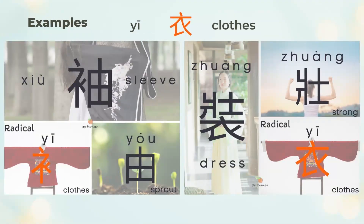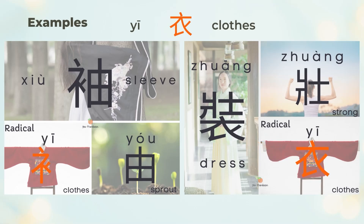袖 means a sleeve. 袖 is the left-side 衣 (cloth) and the right 由 (sprout). 装 means a dress or clothing. 装 is the complete form 衣 on the bottom and the phonetic 壮 (strong) on the top.